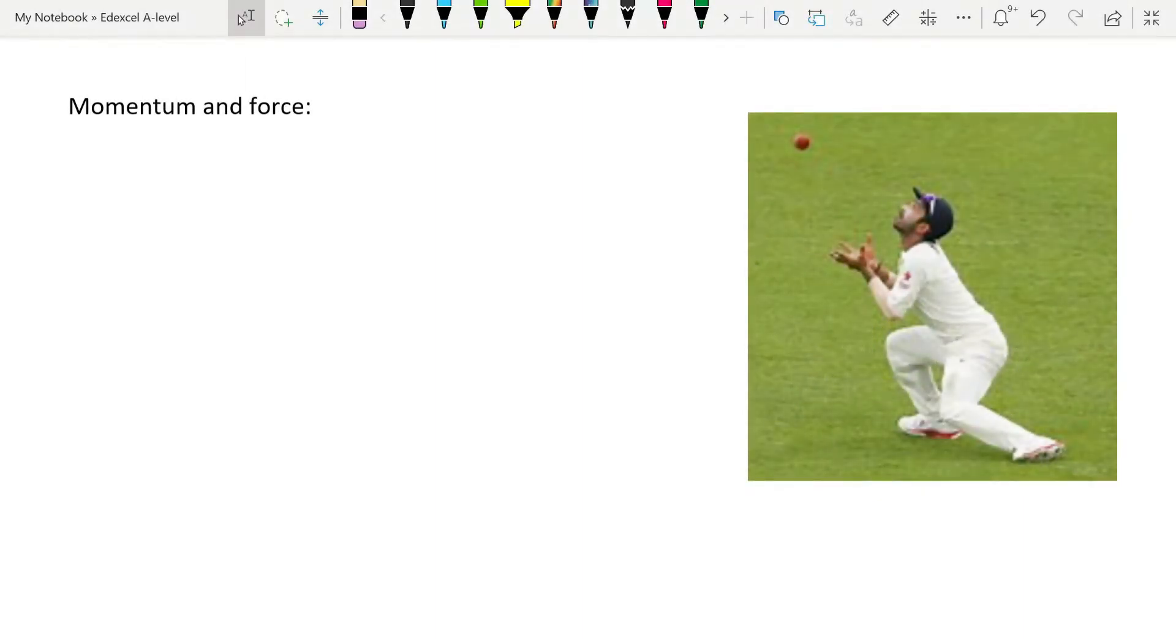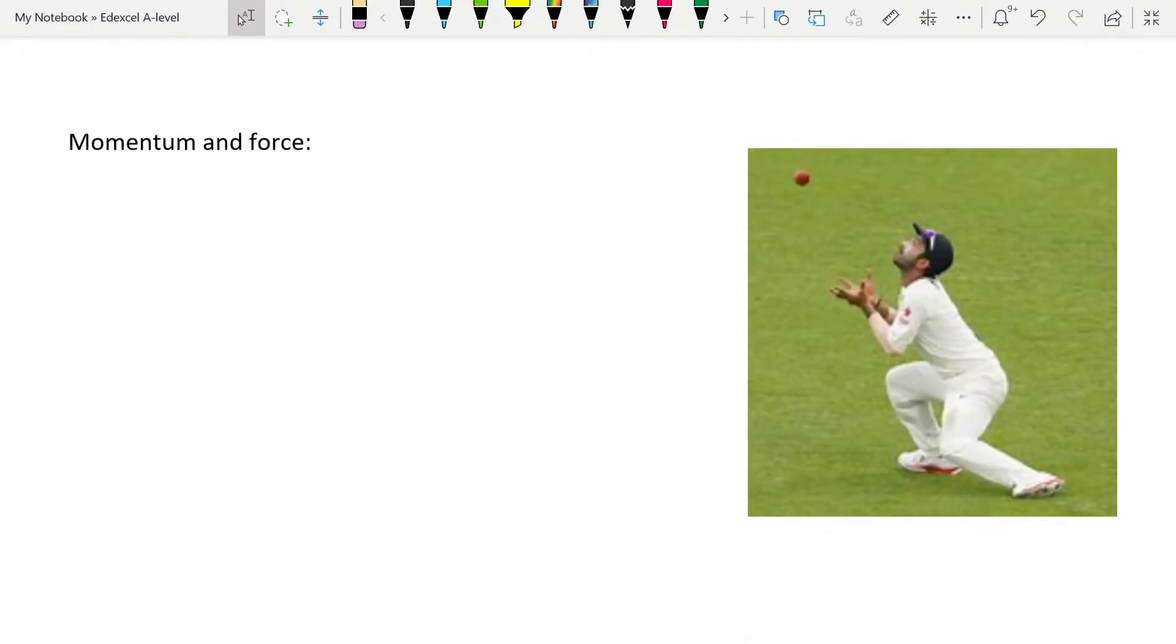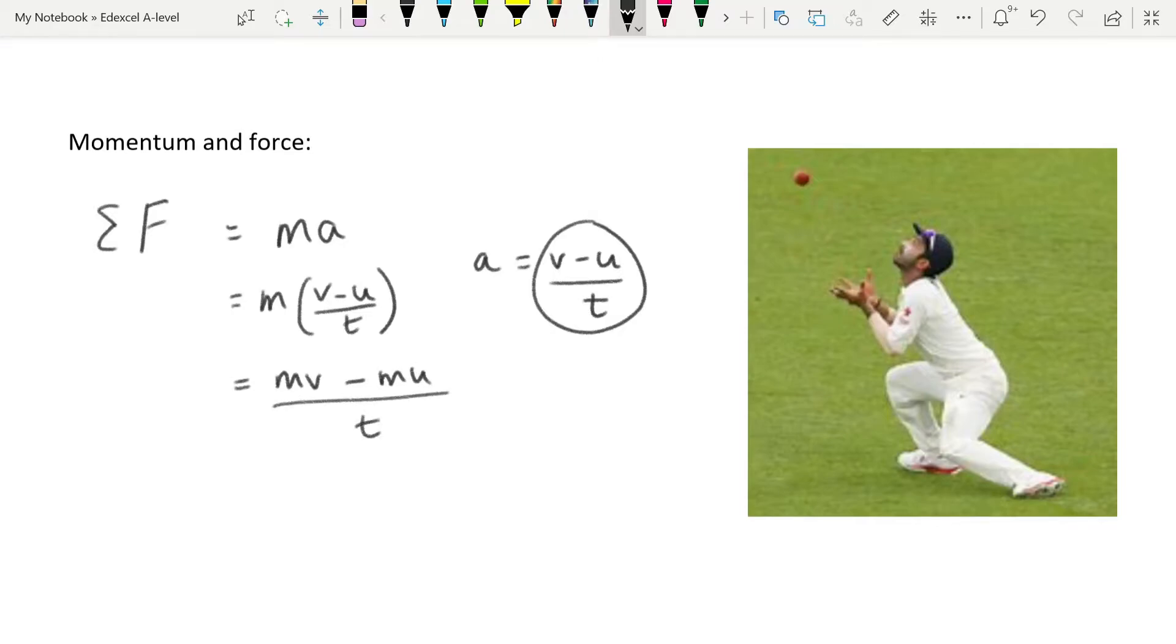One of the main things that we have to be able to do is to connect momentum in with force. We know from our studies of Newton's laws that a resultant force is mass times acceleration. We also know that acceleration is v minus u over t. So we can substitute v minus u over t for a in here, giving us m times v minus u over t. If you multiply that out, you'll see that is mv minus mu over t. So our resultant force is this.